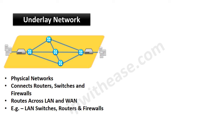The underlay network is about connectivity being provisioned by routers, switches, firewalls, bridges, and hubs. It routes across both the LAN segment and WAN segment of the networks in order to provide connectivity. Some examples of underlay networks are LAN or Ethernet switches, routing on routers, and firewalls.